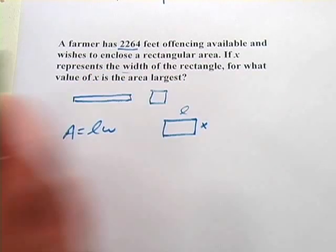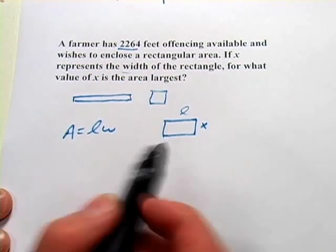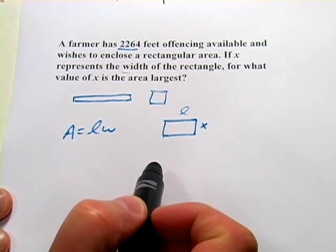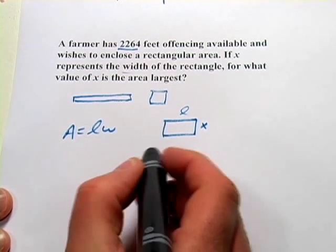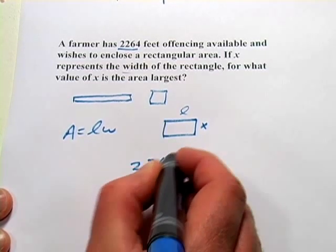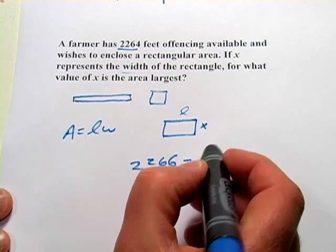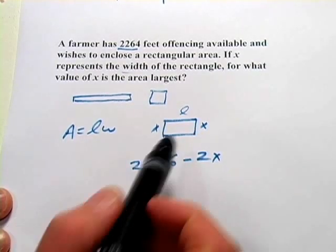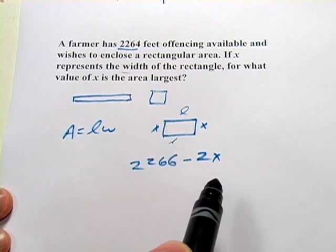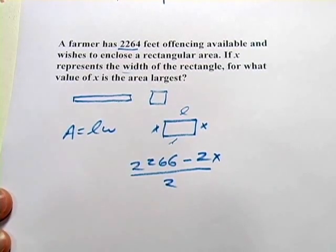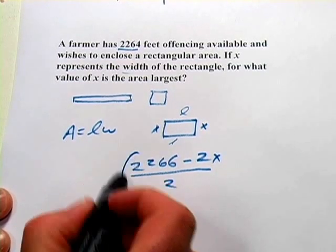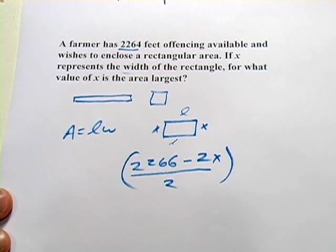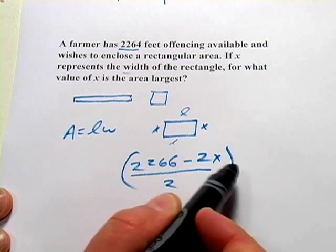We've been given this number 2,264. That's the length of all of these added up together. So if I took 2,264 and subtracted 2x, because there's an x over here as well, that would leave me with just the lengths. But since there's two of them, I'd have to divide that by 2. So that is our length.